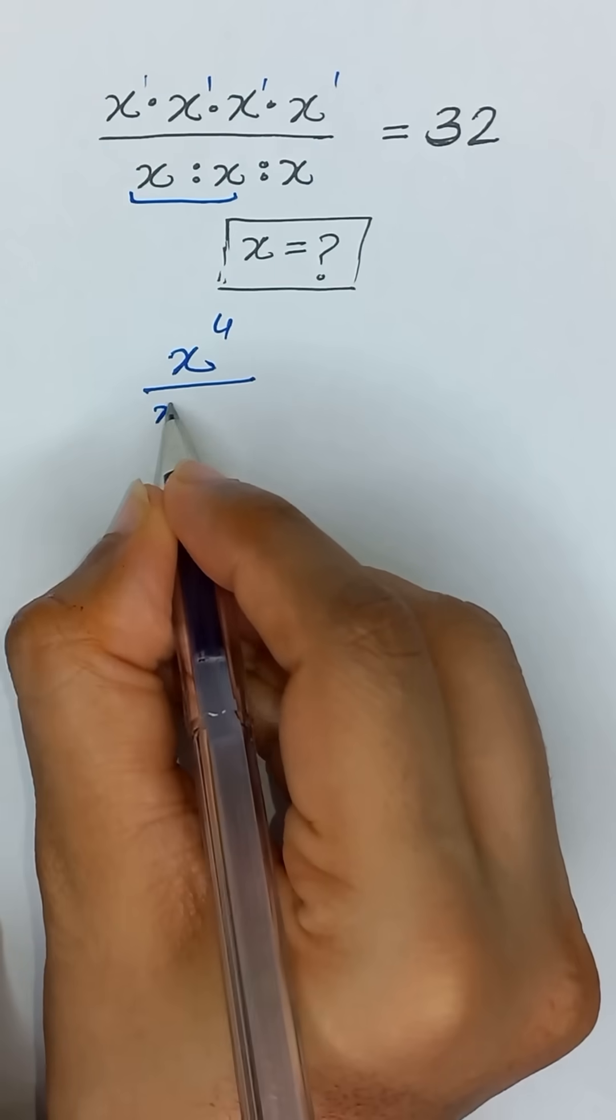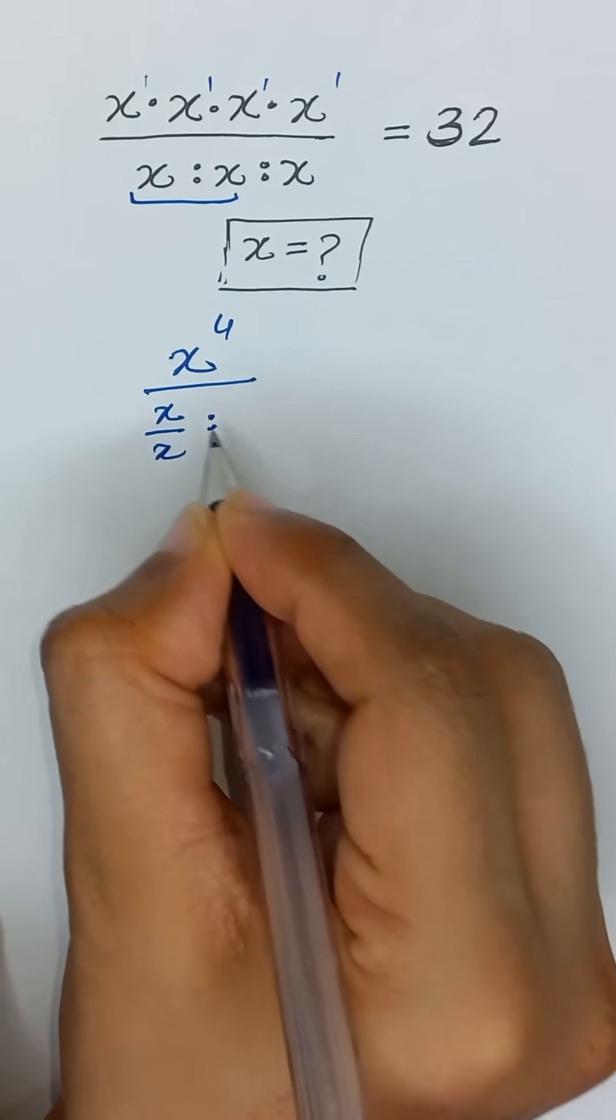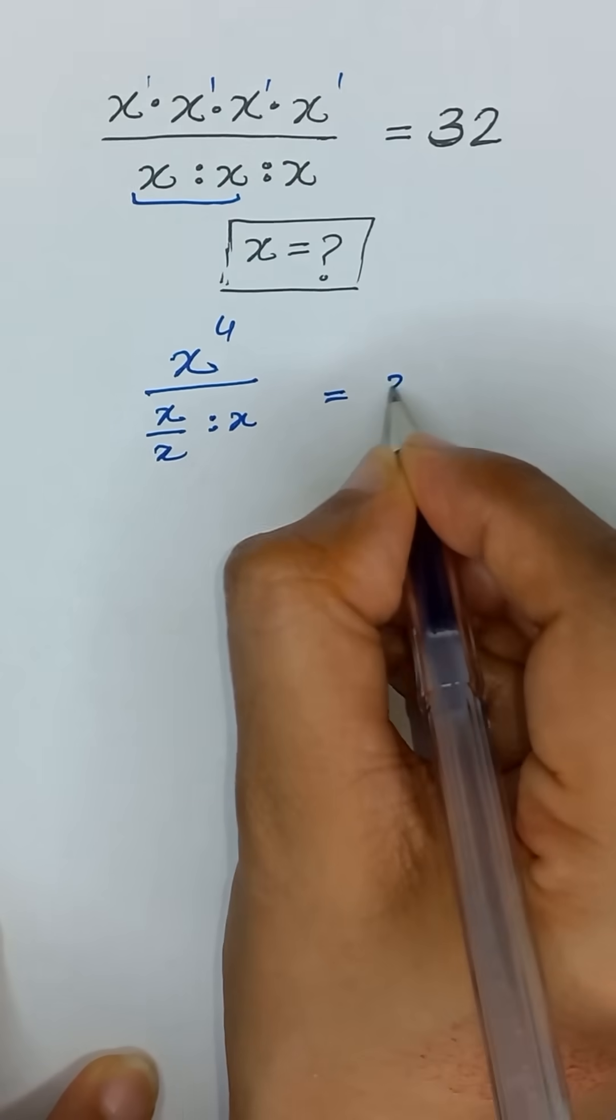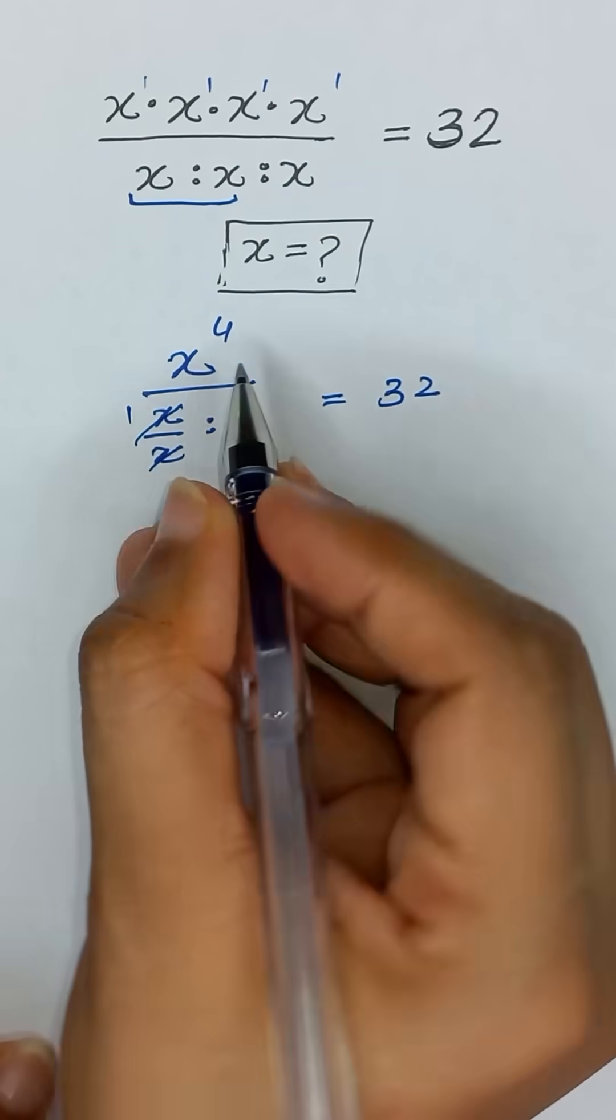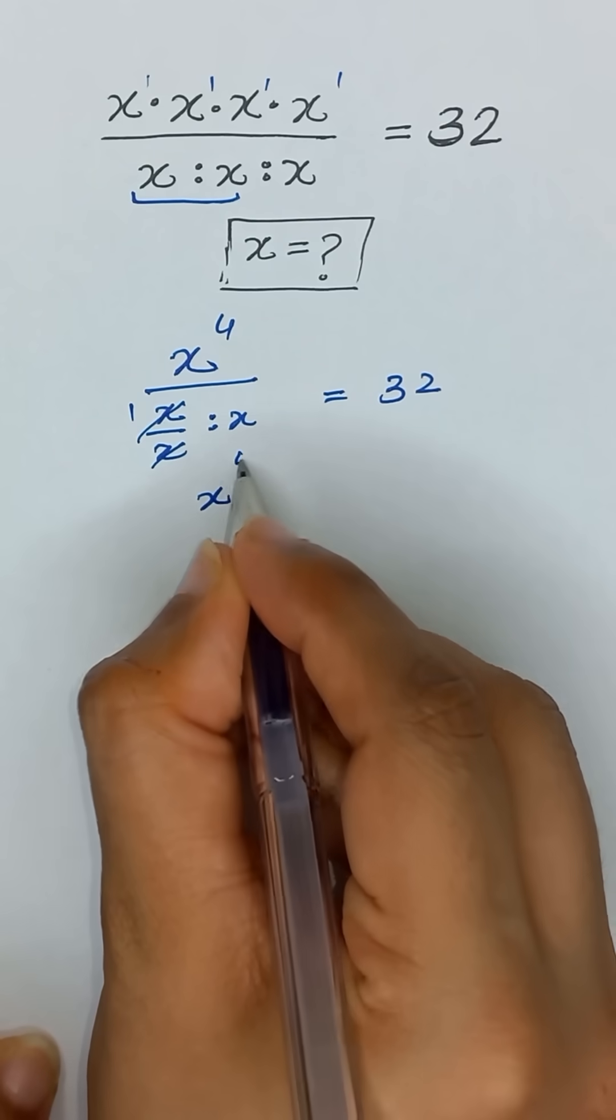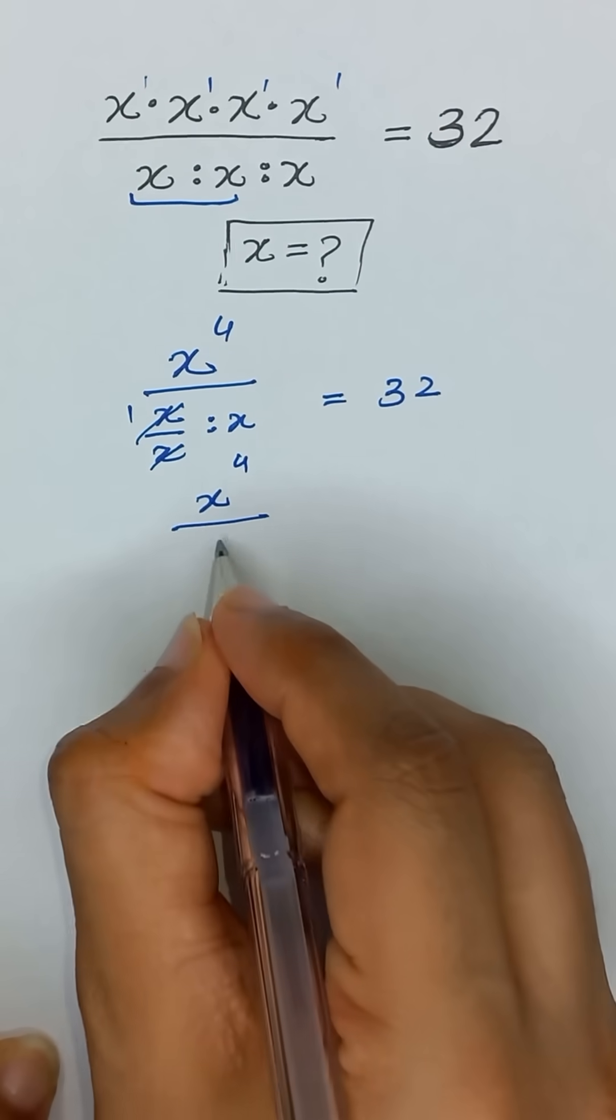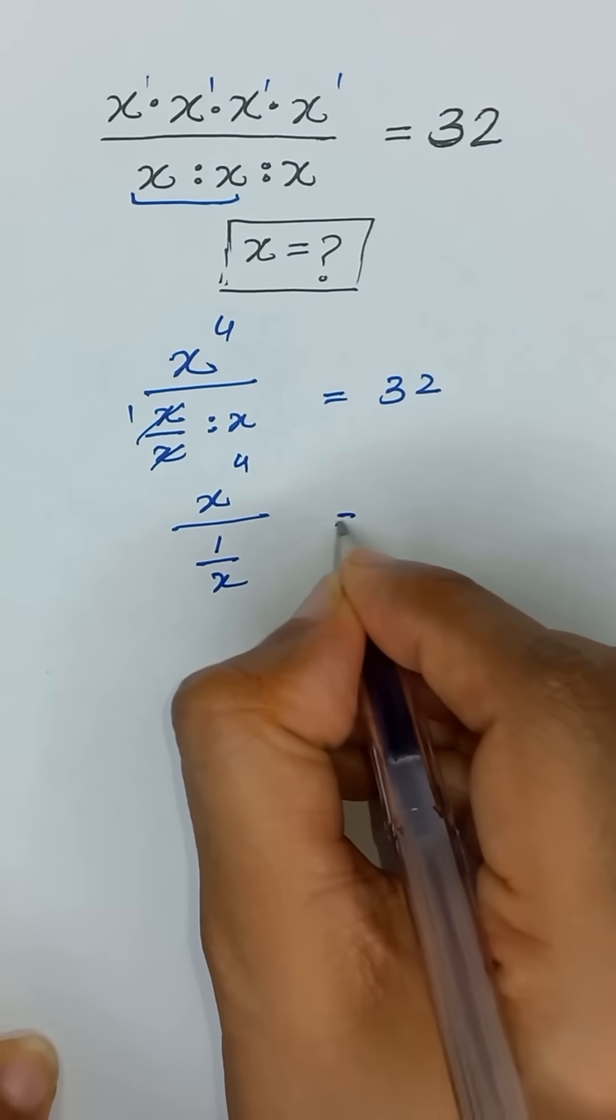x ratio x as x divided by x ratio x equals 32. This x and x cancel out to become 1, so we can write it as x to the power 4 divided by 1 divided by x equals 32.